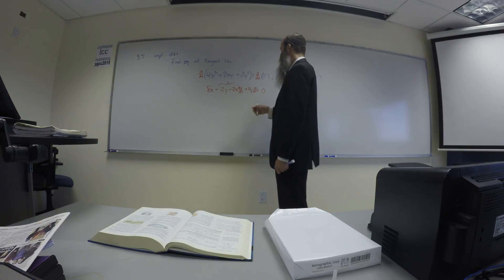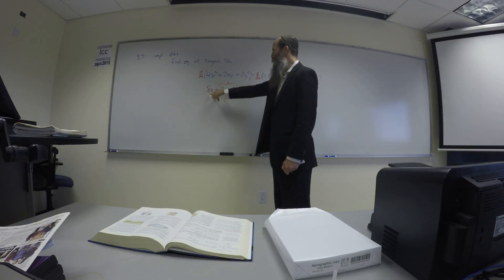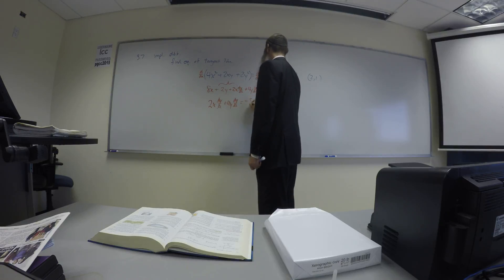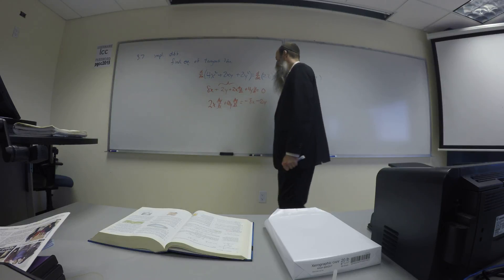Alright, so now what we need to do is get everything with dy dx on one side, and everything without on the other. So we're going to move these two terms to the other side. So we'll have 2X dy dx plus 4Y dy dx equal to negative 8X minus 2Y.